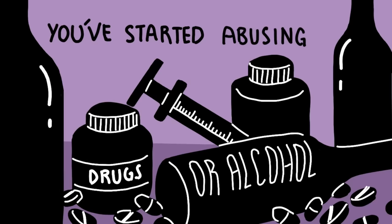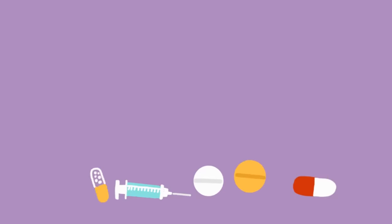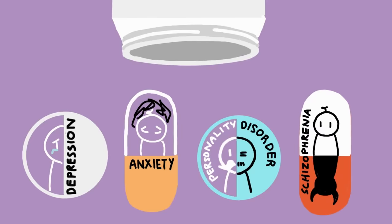Number eight: You've started abusing drugs or alcohol. According to mentalhealth.gov, 1 in 4 or 25 percent of people who live with the symptoms of a mental illness use alcohol or drugs to self-medicate things like anger, anxiety, or mania. Experts believe individuals who suffer from depression, anxiety disorders, personality disorders, or schizophrenia are more likely to use drugs and alcohol as a coping mechanism than people diagnosed with other mental illnesses.